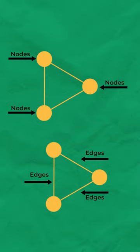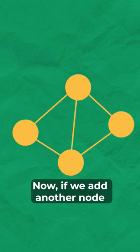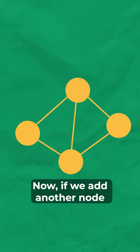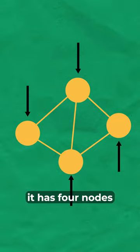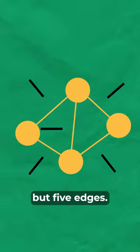Take this graph for example — it has three nodes and three edges. Now if you add another node and connect it like this, it has four nodes but five edges.